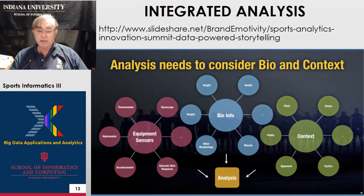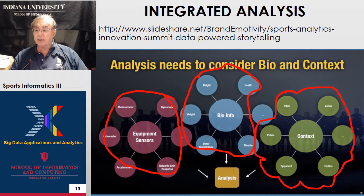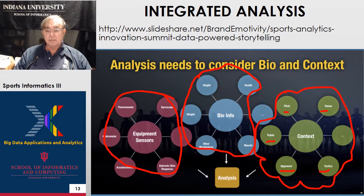This puts it all together. We have the sensors, then we have the biometrics — weight, muscle, health, height — and then we have the context: what's going on, where we're using it, the tactics, the venue, the pitch. We understood from baseball the importance of these various things. The public drive the fiscal model, which drives decisions. The nature of the opponent and which are the good tactics comes from these detailed one-on-one interactions.